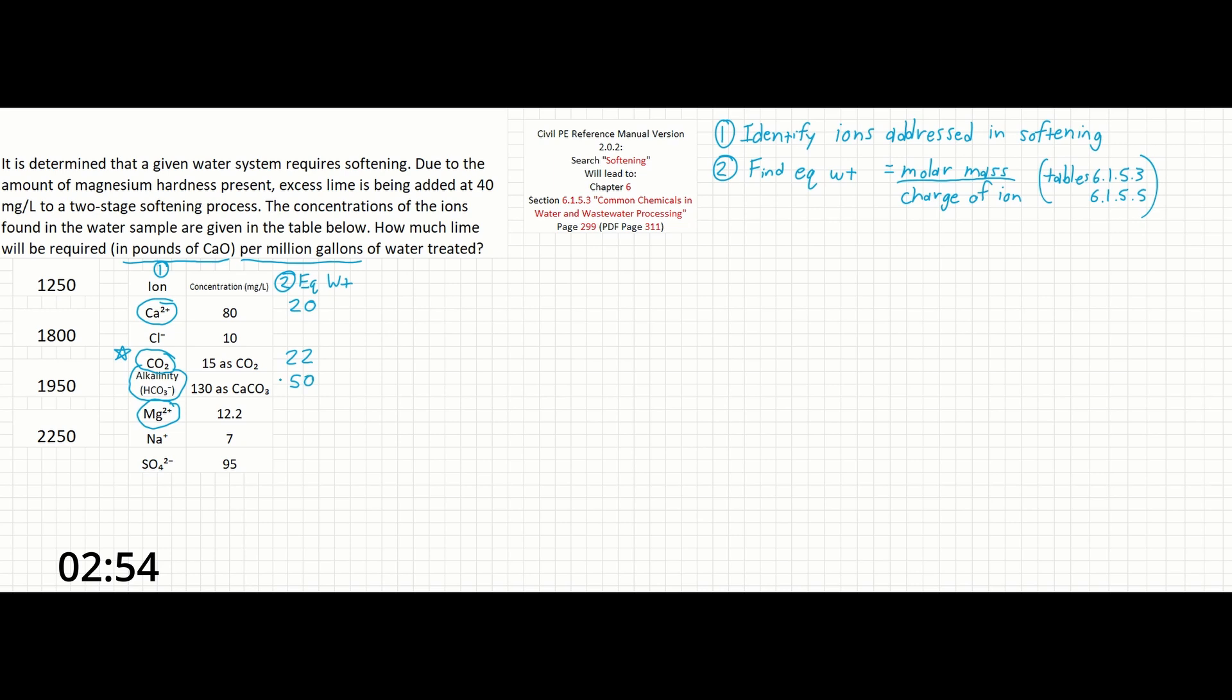This means that we need the equivalent weight of CaCO3 instead of HCO3-. This value is going to be 50. Finally, the equivalent weight of magnesium, Mg2+, is 12.2.